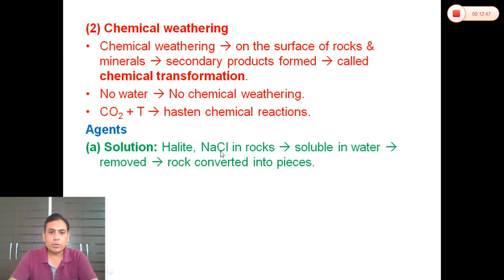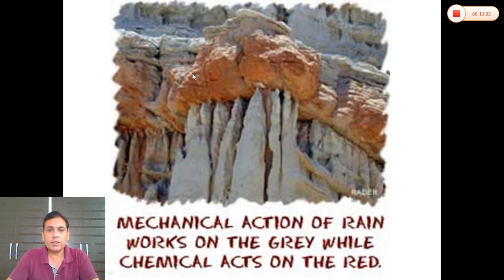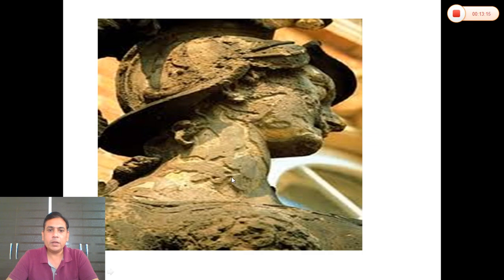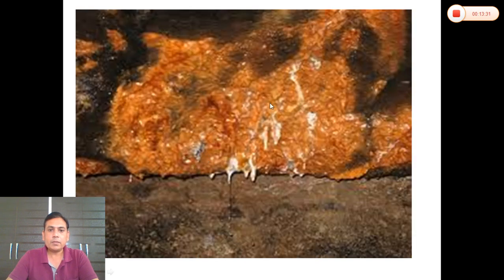The first chemical process is solution: sodium chloride (halite-type rock) is soluble in water, so water removes these constituents and the rock is converted into pieces. Here we see rocks changing to a red color due to chemical weathering. The second process is hydration: water molecules combine with minerals under humid conditions. For example, when water molecules are added to hematite, limonite is formed. The minerals increase in volume and become soft.